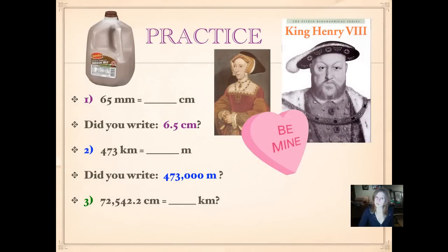Number three: 72,542 and 2 tenths centimeters equals how many kilometers? Pause it and push play when you're ready. Did you write, look at this crazy number. Remember to read it like a regular number. 725,422 millionths. The reason we say that millionths at the end is that that second two ends in the millionths place. Let's count as we go along. Decimal tenths, hundredths, thousandths, ten thousandths, hundred thousandths, millionths. That's where that second two is. So 725,422 millionths. This is great practice to remind us how to read our decimals.